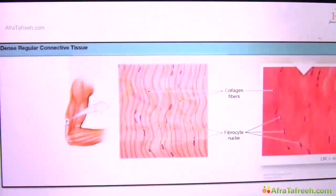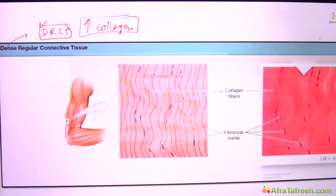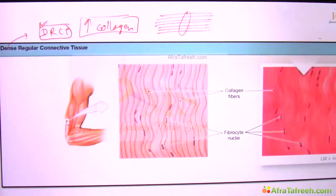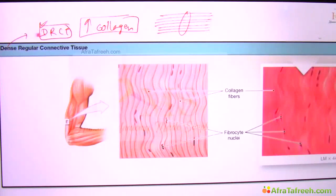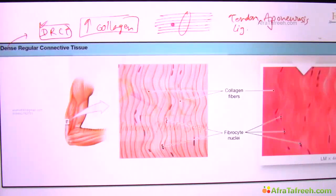What about dense regular connective tissue? Dense regular connective tissue means you have more of collagen fibers — that is why it has become dense. And regular means the collagen fibers are running parallel to each other in a regular fashion. When there is a bundle of collagen fibers running regularly and parallel to each other, there will be dense regular connective tissue. That can be seen in the tendons, the ligaments, or aponeurosis which is a flat tendon, basically structures that pull the bones.